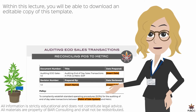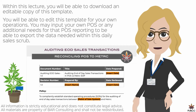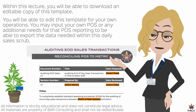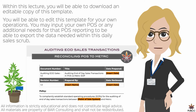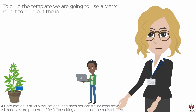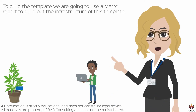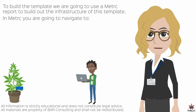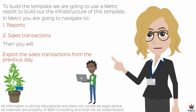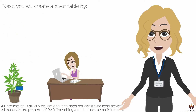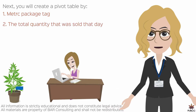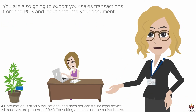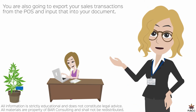Within this lecture, you will find a downloadable template that is editable, and you will be able to edit this template for your own operations and input your own point-of-sale or any additional needs for that point-of-sale reporting to export the data needed within this daily sales scrub. First, you want to build the template. To build the template, we are going to use a Metrc report to build out the infrastructure. You're first going to navigate to Reports, then Sales Transactions, and export the sales transactions for the previous day. Next, you're going to create a pivot table by Metrc package tag and by the total quantity that was sold for that day. Next, you're also going to export your sales transactions from the point-of-sale and input that into your document.